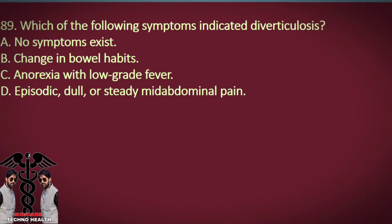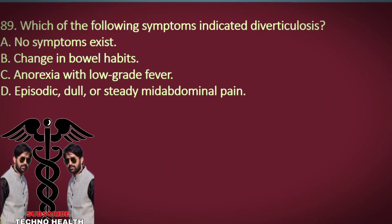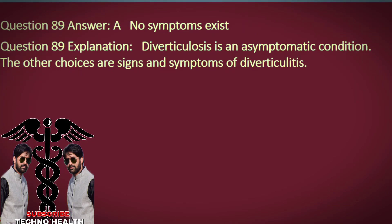Question 89. Which of the following symptoms indicate diverticulosis? A. No symptoms exist. B. Change in bowel habits. C. Anorexia with low-grade fever. D. Episodic, dull, or steady mid-abdominal pain. Answer: A. No symptoms exist. Explanation: Diverticulosis is an asymptomatic condition. The other choices are signs and symptoms of diverticulitis.